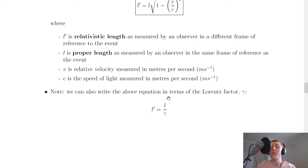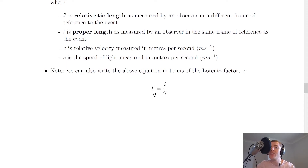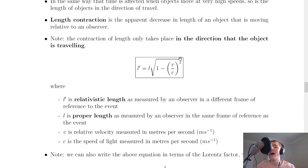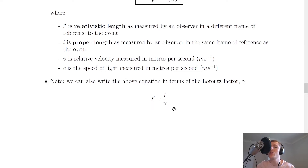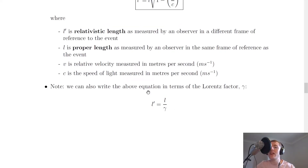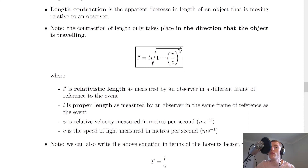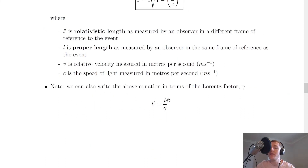We can also write the equation in terms of the Lorentz factor gamma. Remember we could write the time dilation equation as T' equals gamma times T. We can do the same for length contraction, but this time it's L' equals L divided by gamma. The reason for this is that we no longer have a fraction on the right-hand side like we did for time dilation — we have L' equals L times the square root term. Since gamma is equal to 1 divided by the square root of 1 minus V over C squared, we can rewrite the length contraction equation as L' equals L over gamma, because substituting in the term for gamma gives 1 divided by something in the fraction, which means the term on the bottom comes up to the top, leaving us with L times the square root term.